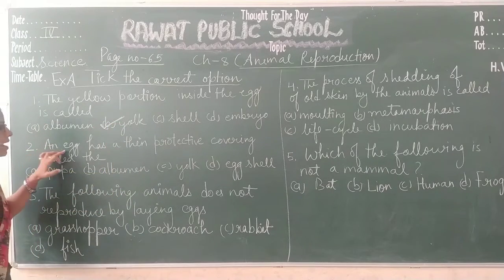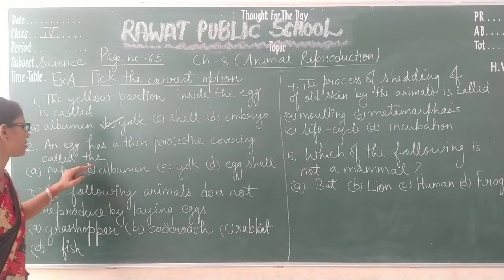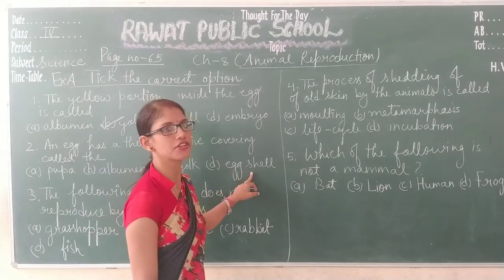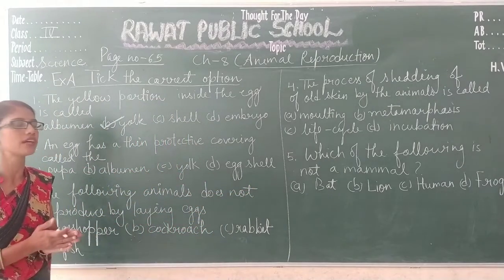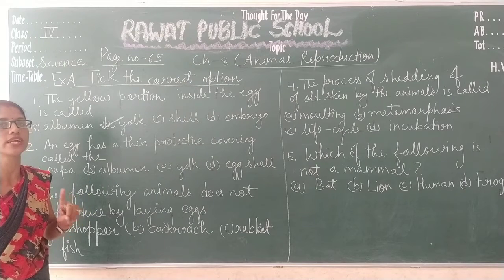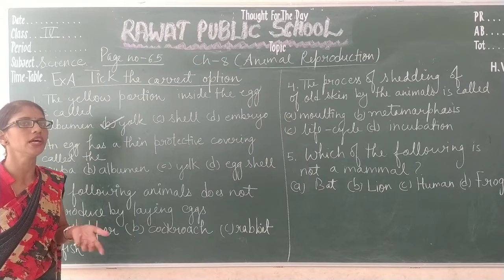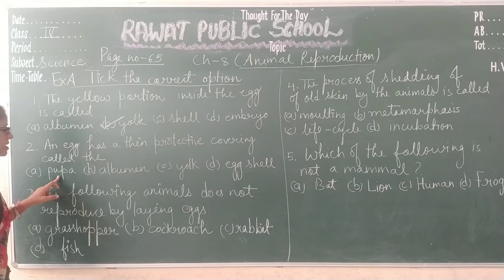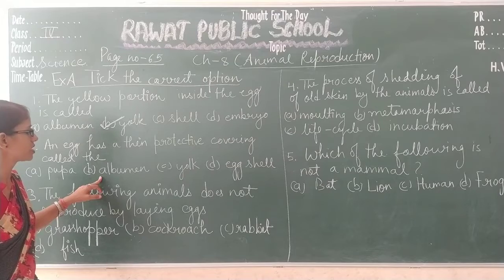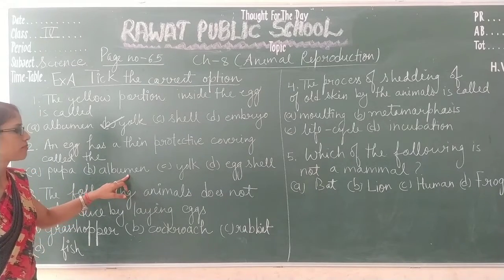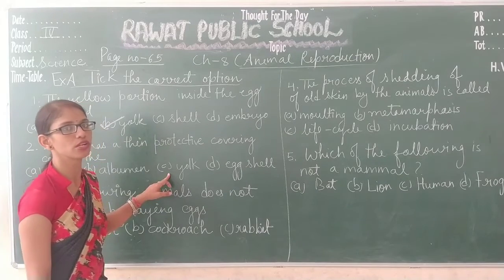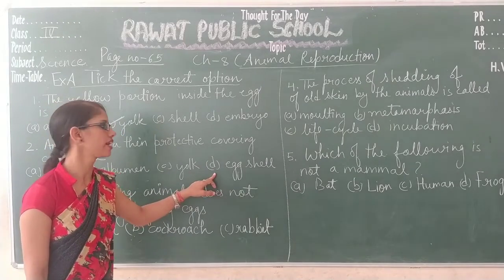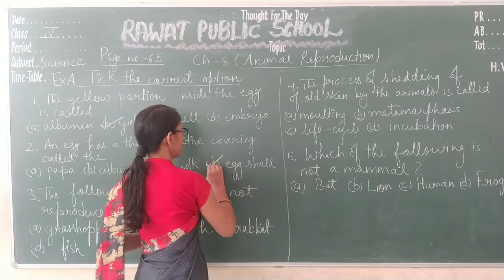Question 2 is: an egg has a thick protective covering called the. Options are A: pupa, B: albumin, C: yolk, and D: eggshell. The structure of an egg has 3 layers — the outermost protective covering is the eggshell. Pupa is the resting phase of the insect life cycle. Albumin is the white substance containing 40 different types of proteins. Yolk is the yellow substance providing nutrition. So D, eggshell, is the correct answer.